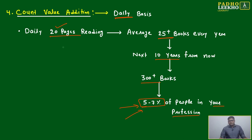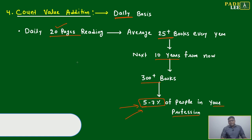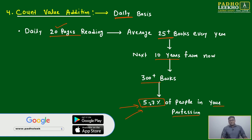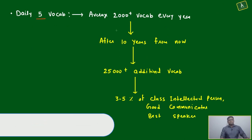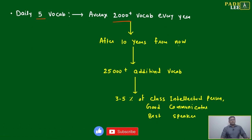Next value addition on a daily basis: if you are doing daily five vocabulary words, just five, average 2000 plus vocabulary you will be able to do every year. After 10 years, approximately I am telling, additional vocabulary you will have, whatever you have plus the addition of that.